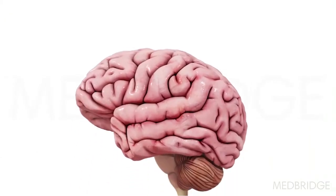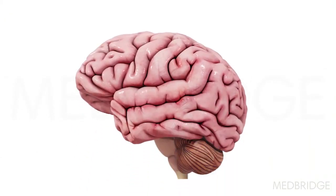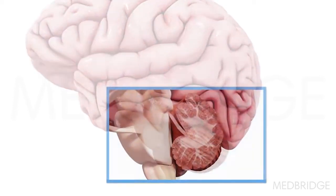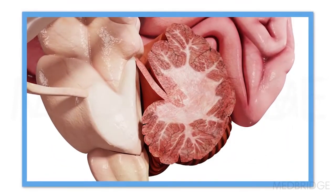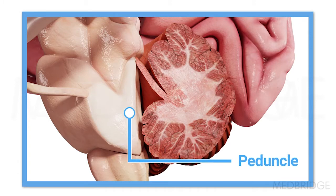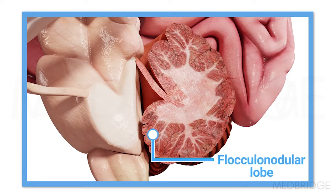Within the cerebellum there is a particular component — a deep set of structures in the medial part that fans out through the peduncle. There's something called the floccular nodular node, which is a very specific vestibular cortex situated there. This reflects the really intimate relationship between the vestibular system and the cerebellum.